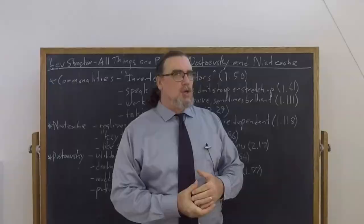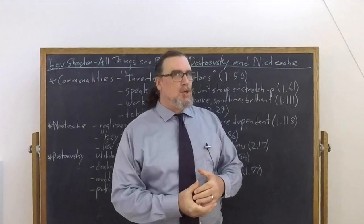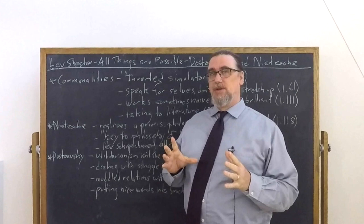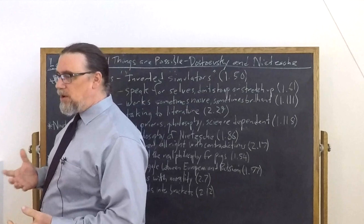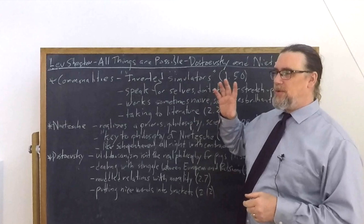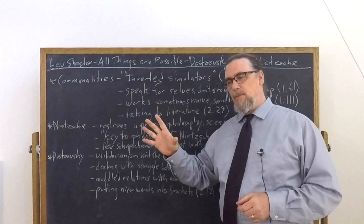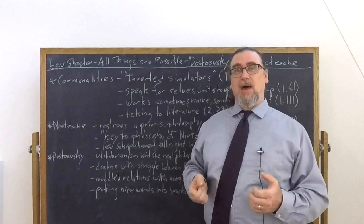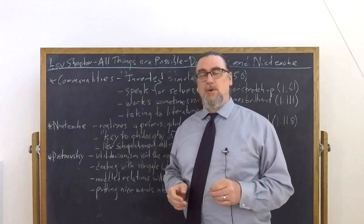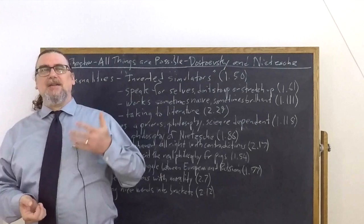Two of the authors that Lev Shestov is going to bring up quite often both on their own and in relation to each other in All Things Are Possible are Friedrich Nietzsche and Fyodor Dostoevsky. One of them, a German born and German language philosopher, but somebody who also worked with literature, as we'll talk about soon. And the other a novelist and short story writer from Russia who has a lot of philosophical ideas in the mouths of his characters and in the discussions that they have with each other in the lives that they live. And as it turns out, if you look through Shestov's corpus, you will actually find a book specifically on Fyodor Dostoevsky and Friedrich Nietzsche. And he calls this the philosophy of tragedy, Dostoevsky and Nietzsche.